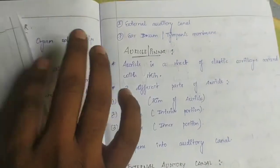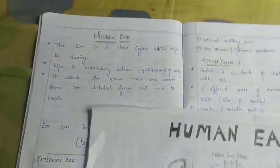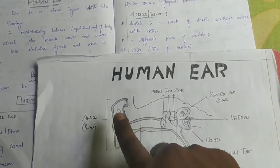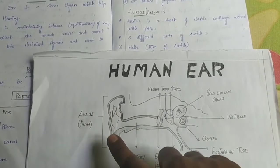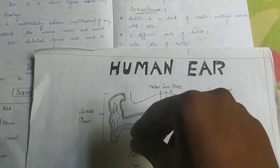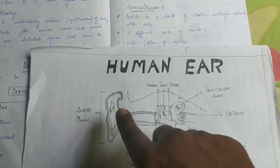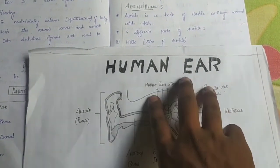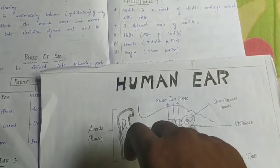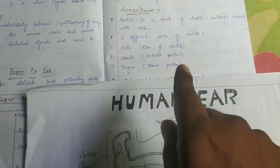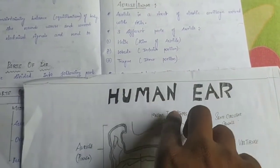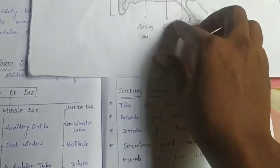Let's see the diagram. The auricle is a sheet of elastic cartilage covered with skin. Within the auricle, there are three different parts: the helix, the lobule, and the tragus. The helix is the rim of the auricle, the lobule is the inferior portion, and the tragus is part of the inner portion.